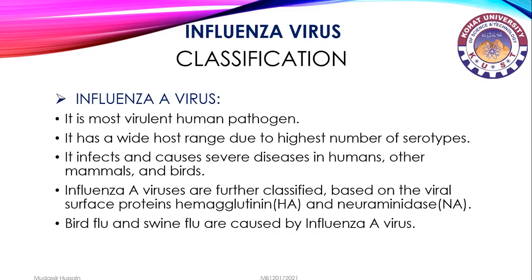Influenza A virus is the most virulent human pathogen. It has a wide host range due to the highest number of serotypes and causes severe diseases in humans, other mammals, and birds. Influenza A viruses are further classified based on the viral surface proteins hemagglutinin and neuraminidase. Bird flu and swine flu are caused by influenza A virus.